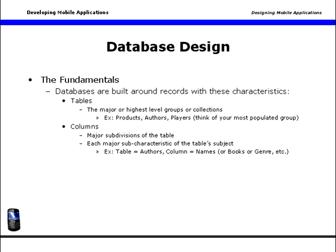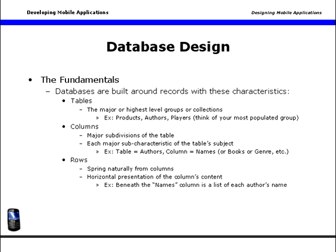Each column is then separated into rows, which hold data that spring naturally from the columns and which are horizontal presentations of the column's data content. For example, beneath the names column is a list of each author's name.